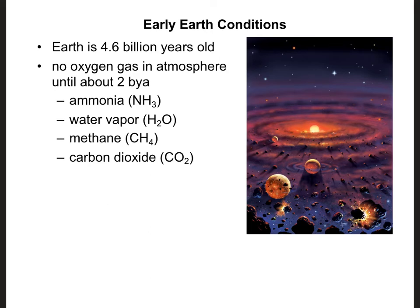In this video we're going to be talking about the history of life on Earth. The first thing to know is that the early Earth conditions were very different than what they are today. Most scientists will agree that Earth is about 4.5 to 4.6 billion years old. One thing that's important to note is that there was no oxygen gas in the atmosphere until about 2 billion years ago.